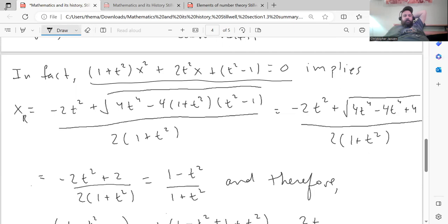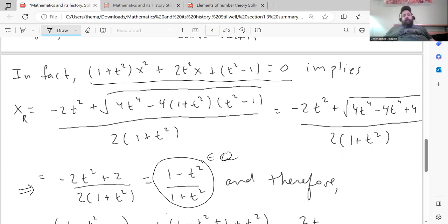So we get this expression down here. Negative 2t squared plus 2 over 2 times 1 plus t squared. And you can factor out the common factors of 2 and cancel them. And you get that x has to be equal to this expression here: 1 minus t squared divided by 1 plus t squared. Notice this is rational. It's rational because t is rational. So an equation of rational numbers is rational.